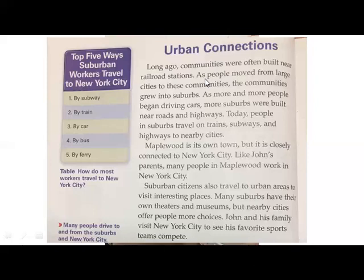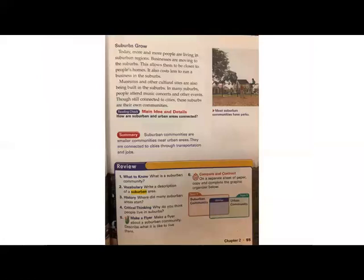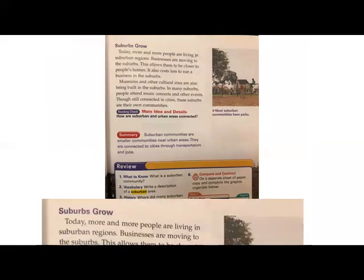How did suburban communities come into being? Let's look at this picture on the second page. Most suburban communities have parks because there's more space — no crowded, tall buildings.